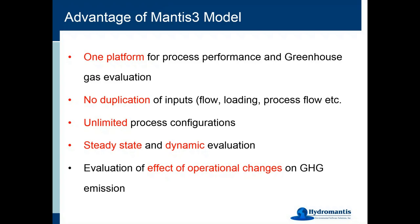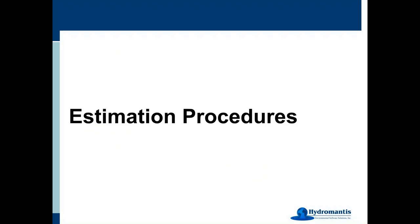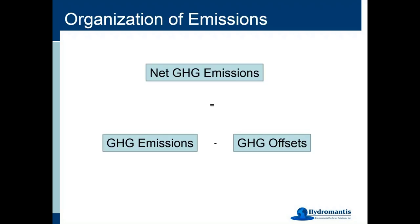Coming to estimation procedures — a brief overview of what we use in Mantis 3. We estimate net greenhouse gas emissions, which equal total GHG emissions minus greenhouse gas offsets. We estimate all emissions and also estimate the offsets realizable in the system, providing the user the option to include those offsets when calculating net greenhouse gas emissions. This gives users the information to arrive at the final values of greenhouse gas emissions they want to report.